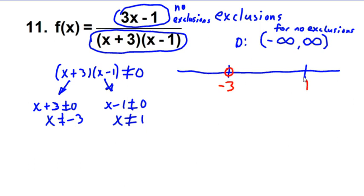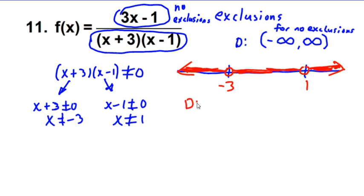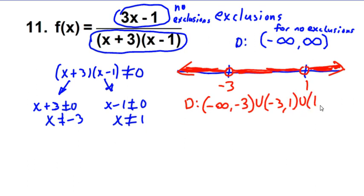We have open points or circles at negative 3 and at 1. Our domain is going to be everything to the left — greater than negative infinity up to negative 3 — and between negative 3 and 1, and finally to the right of 1. So our domain in interval notation is: negative infinity to negative 3, union negative 3 to 1, union 1 to infinity.